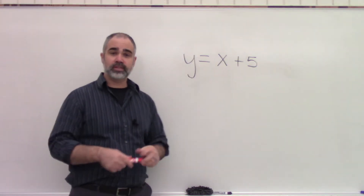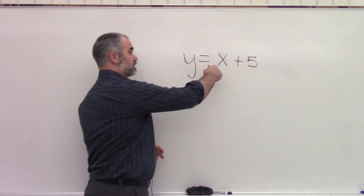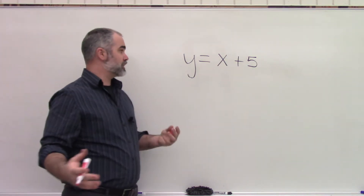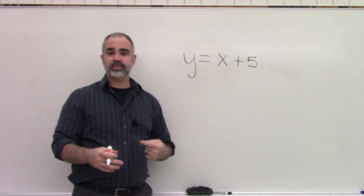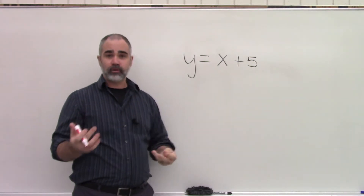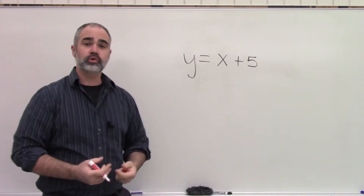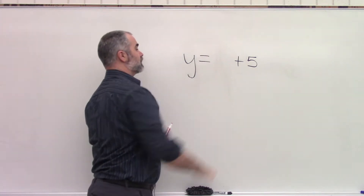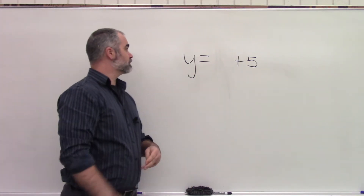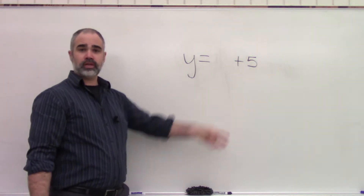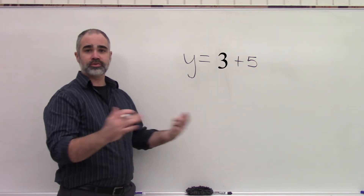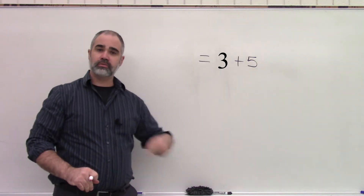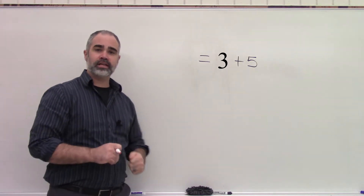Let me give you an example of what this looks like. Variables are just numbers we don't know, and the reason we call them variables is because they vary — you can put in whatever you want into a function. So I could put lots of different numbers in here. For example, if I put the number 3 in, it's going to crunch through my machine and spit out an 8.